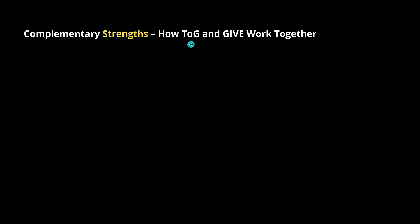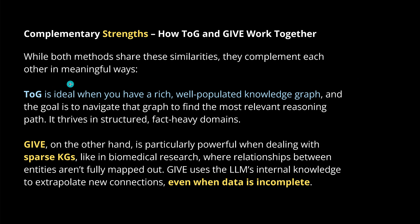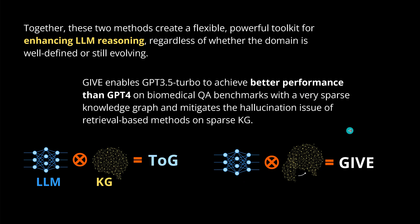You can use ThinkOnGraph and GIF together or in particular use cases. TOG is ideal when you have a rich, well-populated knowledge graph — if your knowledge graph is complete enough for your particular query domain and complexity level, you're good to go. However, if you have a sparse knowledge graph and the complexity of human queries is high, GIF is the more powerful methodology, especially when structured data is incomplete. Both methods create flexible, powerful toolkits for enhancing LLM reasoning — use ThinkOnGraph for well-defined domains, and GIF for domains that are still evolving and sparse.